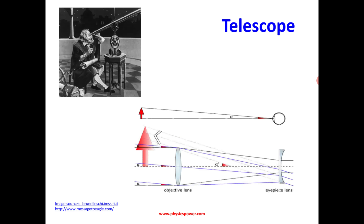This is the design of the telescope. Two lenses are used — this is the refracting telescope. The objective piece uses a convex lens, and the eyepiece uses a concave lens.